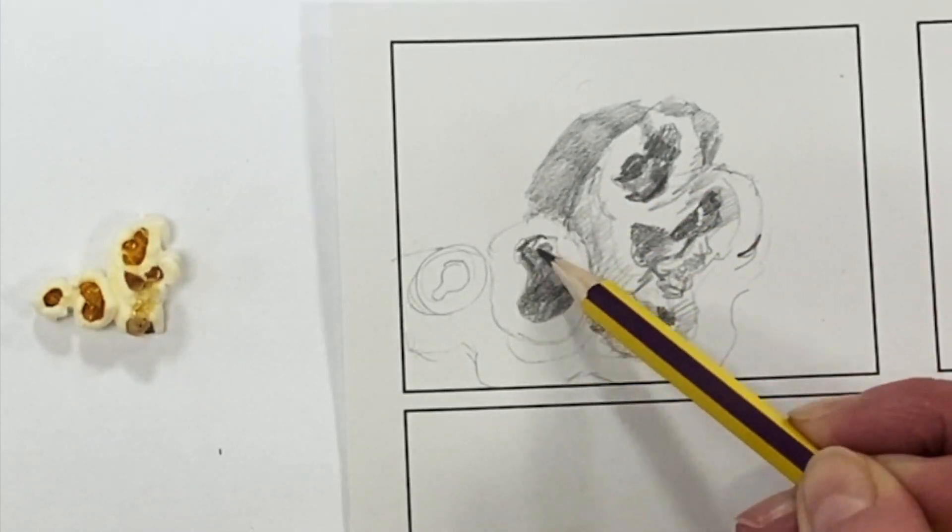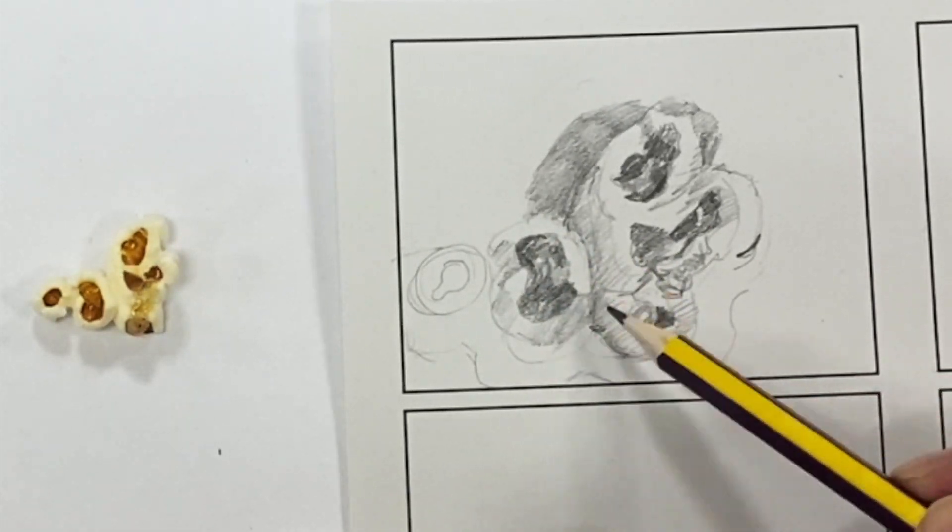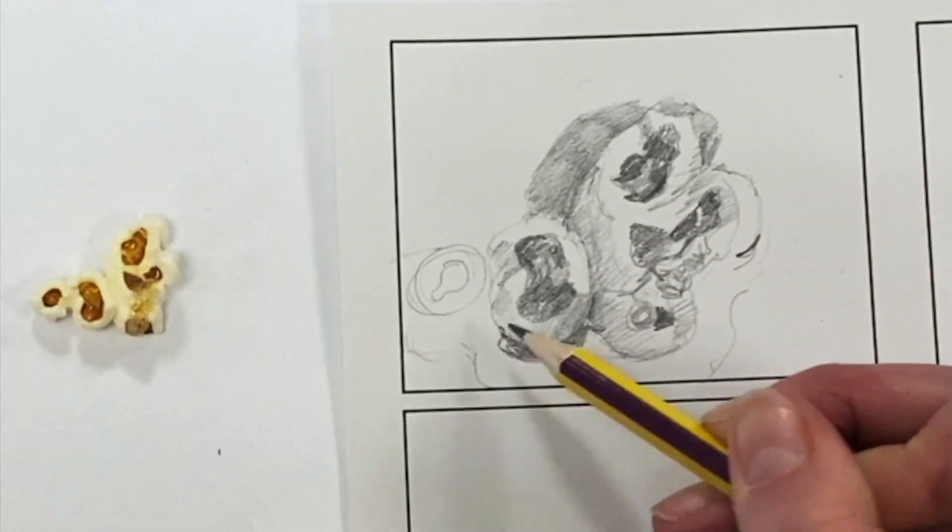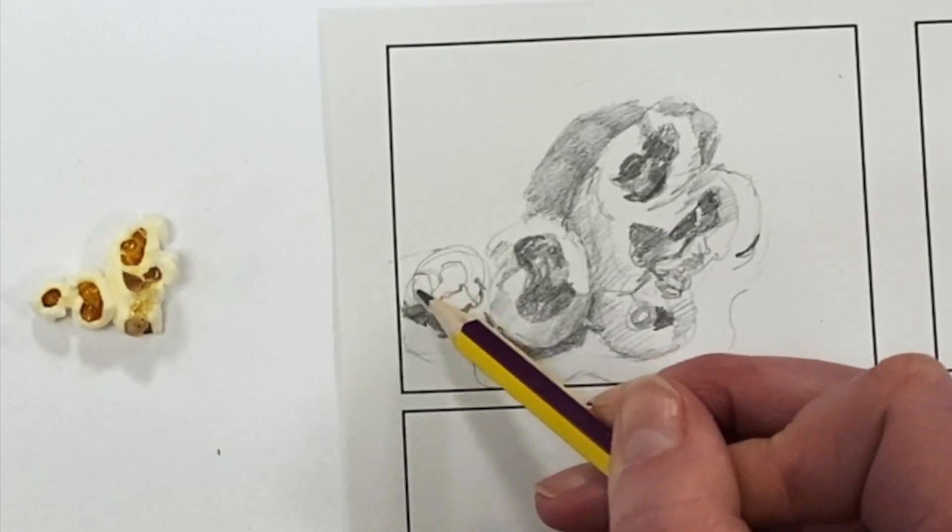So the dark areas are pretty easy to source out, but you also want to look in the white areas and make sure you show a range of tone.